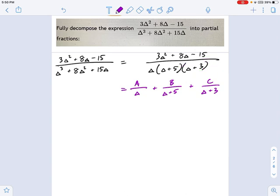And now I'm going to multiply both sides by every single one of those denominators. So on the left side, the denominator just disappears. Everything cancels out nicely. On the right side, we get A times delta plus 5 times delta plus 3.